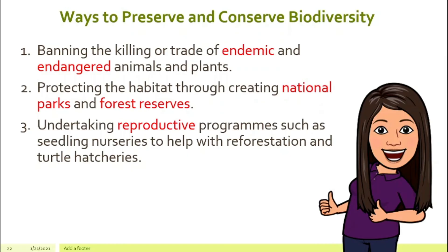Thirdly, I think we can also undertake a reproductive program. What does that mean? Meaning we reproduce the plants and animals. For example, we can have seedling nurseries, meaning we nurse or provide a place for the baby trees to grow, and that will help with the reforestation. Or we can also have a few centers for turtle hatcheries, meaning we create a very safe environment for the turtle egg to hatch and for them to grow as baby turtles before we release them back into the ocean.